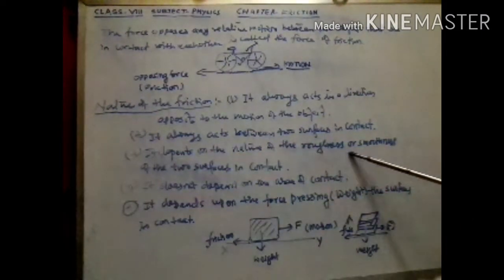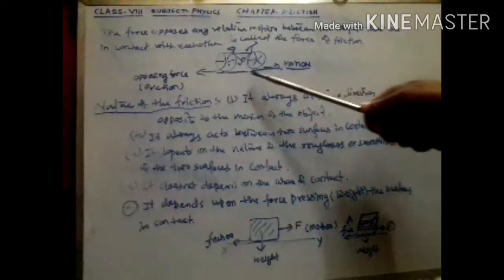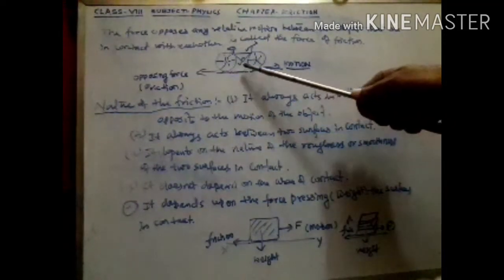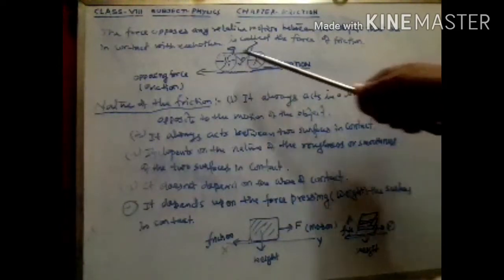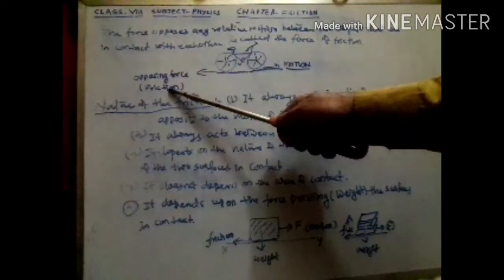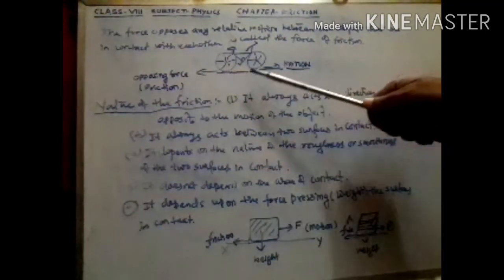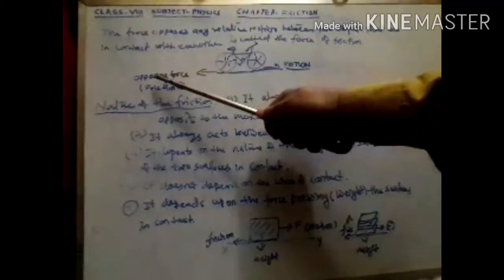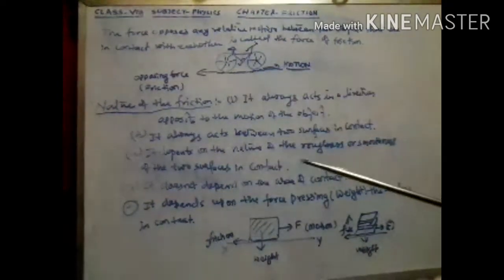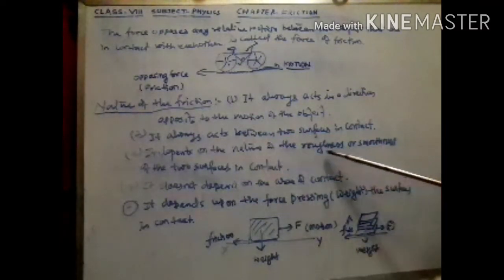Point three: friction depends on the nature of the surface — its roughness or smoothness. When the surface is rough, that is an uneven road, more force is required to pedal the bicycle, meaning the opposing force is also greater. But if the surface is smooth, less force is required to move the bicycle, meaning there is less friction. So the nature of friction depends on the roughness or smoothness of the surface in contact.